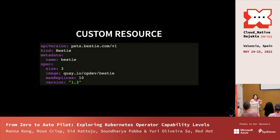A custom resource is an object that lets you extend Kubernetes capabilities by adding API objects useful for your particular application. Our custom kind, specifically for our Bestie application, is of kind Bestie. You can see we specify a size of three, with an image, max replicas, and a version field.